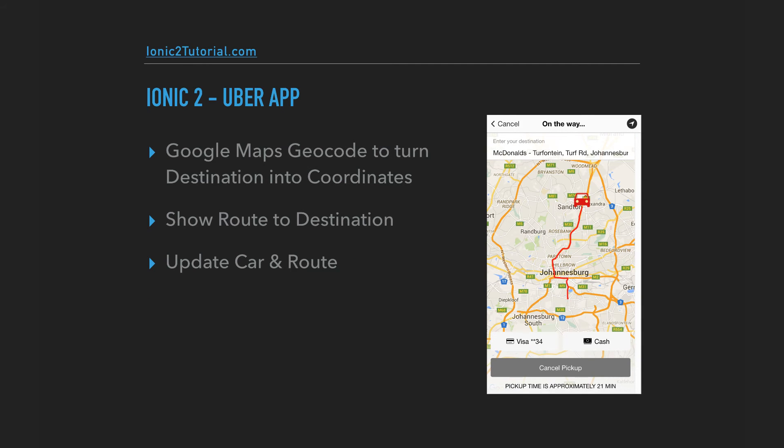Once we turn that destination into GPS coordinates, we'll show the route that the car is going to take and then we'll animate the car along that route.